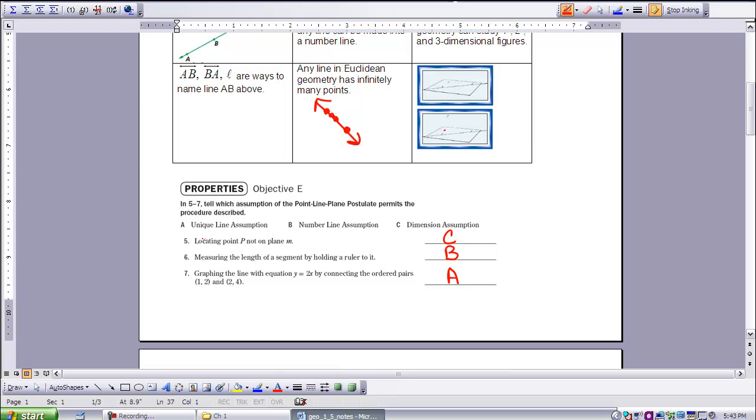Number seven is graphing the line with equation y equals 2x by connecting the ordered pairs (1, 2) and (2, 4). As you see here, we have two points. Two points determine a line, so that would be the unique line assumption.